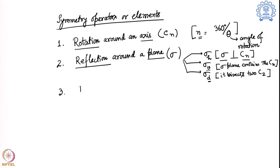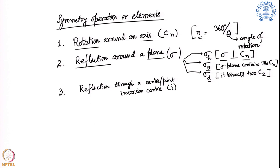The next symmetry element is reflection through a center or point, also known as the inversion center, given the symbol i. This center sits at the center of the molecule; reflection is the symmetry operation and the center or point is the symmetry element. Importantly, the inversion center does not require an atom to be present at that point — for example, benzene has an inversion center at its center even though no atom is located there.